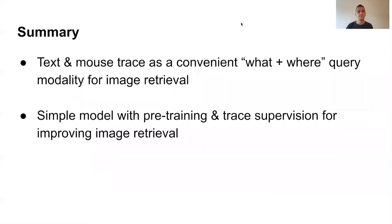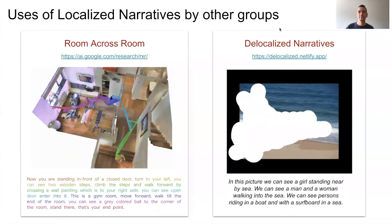In conclusion, I presented a new query modality where the user can specify both the 'what' and the 'where' simultaneously with text and mouse trace. I also showed a concrete instantiation with a neural network model that takes trace supervision to improve image retrieval.